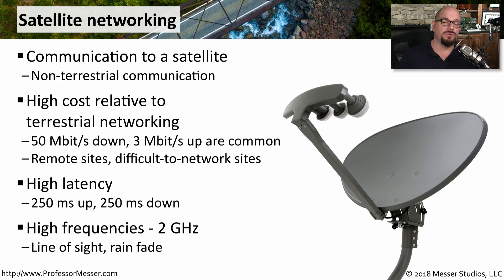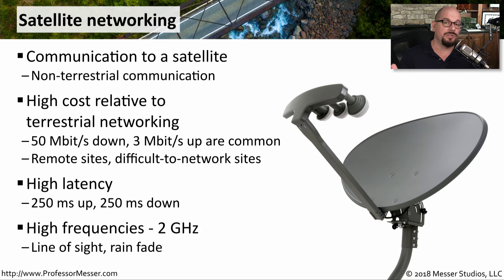Satellite communication commonly uses higher frequencies, usually in the 2 gigahertz range. This is a line-of-sight communication, and it requires that nothing is in the way between you and the satellite. It's common when rain clouds come in that you get rain fade — the connection between you and the satellite is disrupted by all the water in the clouds, and you have to wait for the clouds to go away to receive a network communication again.